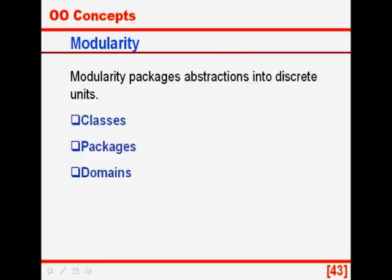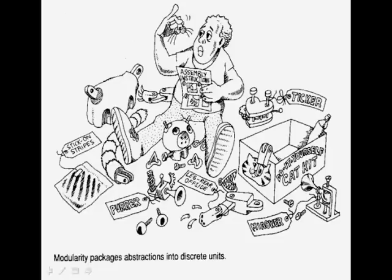Next we come to another feature of object oriented programming: modularity. Modularity is the packaging of abstractions into discrete units. We have classes, packages, domains or namespaces. This is the picture of modularity from the Grady Booch book.